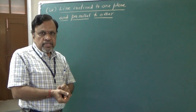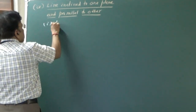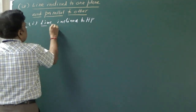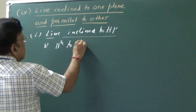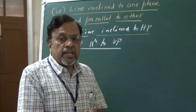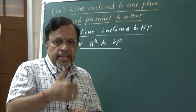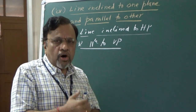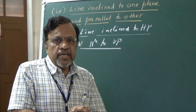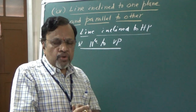Since I have written a general statement, in this particular case I can get two different illustrations. First, I may consider a line inclined to HP and parallel to VP. Now, we have already seen that when a line is parallel to a particular plane, the true length is seen on that particular plane. So obviously, since the line is parallel to VP, the true length of the line will be seen in the front view, which is the projection onto the vertical plane.